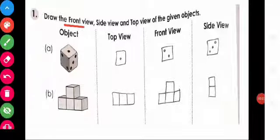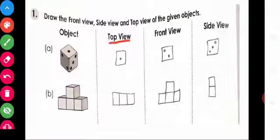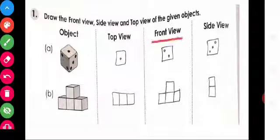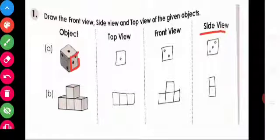Draw the front view, side view, and top view of the given objects. What is that given object? Dice. The top view — it is a single dot. And then front view — this is the front view, two dots. And then side view — it is three dots.